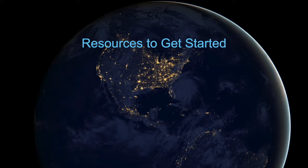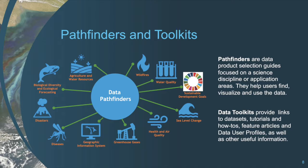We understand NASA data is complex, and you might be feeling overwhelmed. To help get you started, Pathfinders are the perfect place if you are new to using NASA Earth Science data. Pathfinders focus on key themes and familiarize users with various datasets applicable to a study area, offer guidance on resolutions, and provide links to data sources. Data toolkits are for more proficient users and are designed as entry points to access NASA Earth Science data resources organized by topic, containing links to datasets, tutorials and how-tos, feature articles, and other useful information.